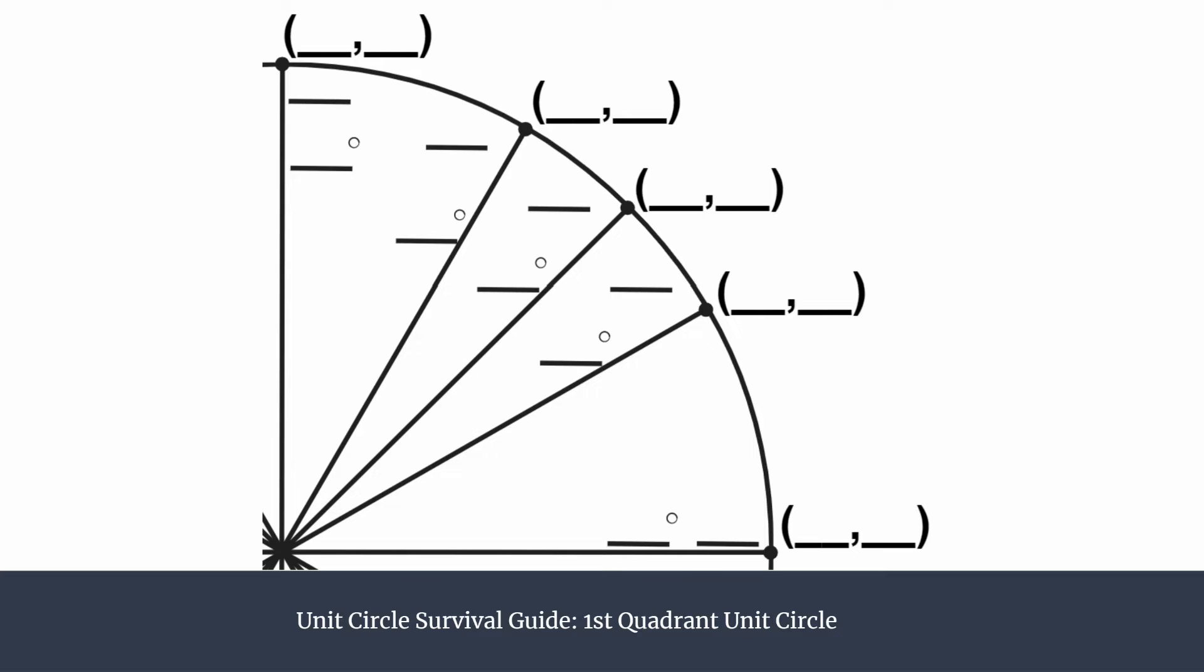Of course if you don't rotate at all you have zero degrees. The next major special angle of the unit circle is 30, then 45, then 60, then 90.